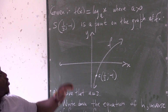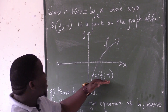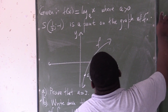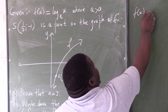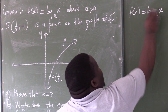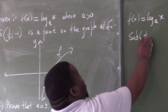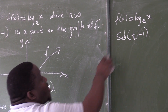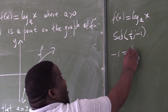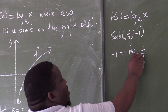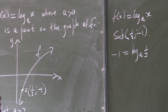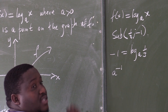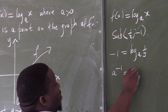We are going to go to f of x and substitute the point that lies on the graph of f. So in f of x, I have log base a of x. I will substitute the point (1/3, -1). It means in my y I am putting negative 1, and in my x I am putting 1/3.